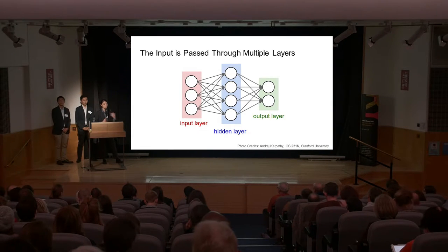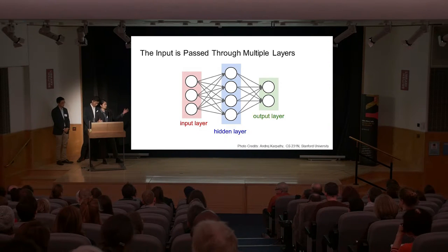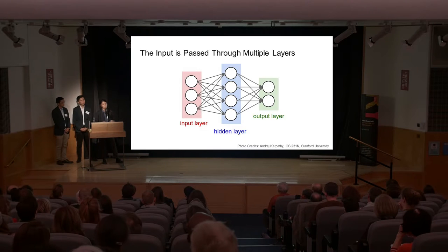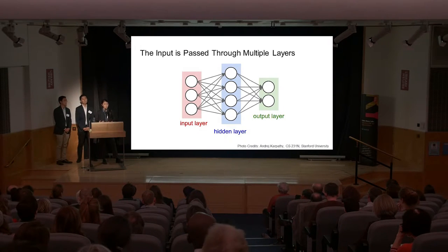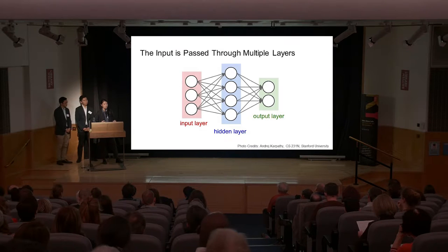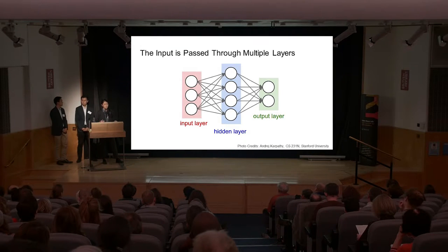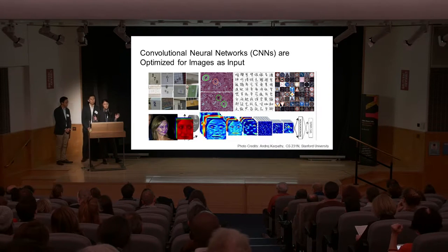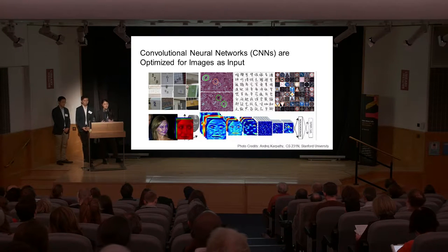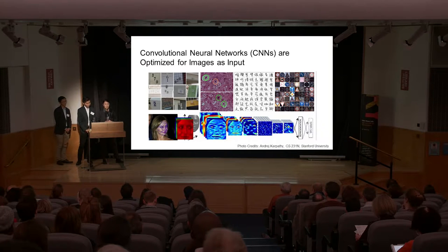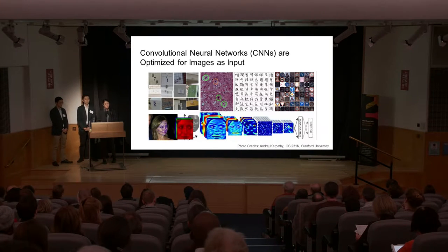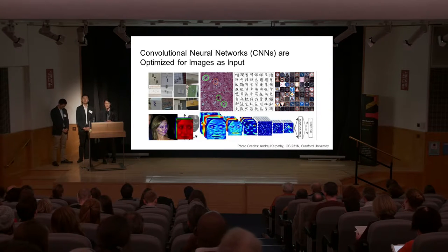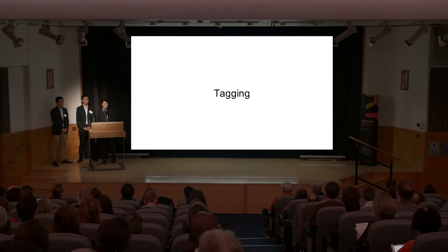In a neural network, the multiple layers — input, hidden, output — allow it to build such complex models. In general, the more neurons you have, the better results you get. Convolutional neural networks, or CNNs, are a flavor of neural networks optimized for images in particular. Brian will talk about how we use CNNs to categorize images into tags.